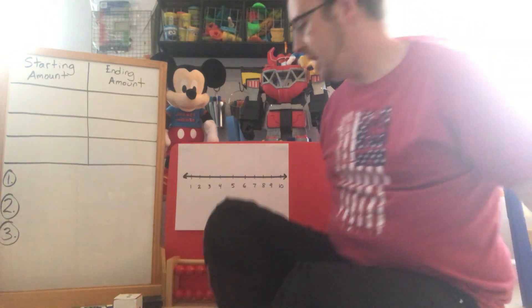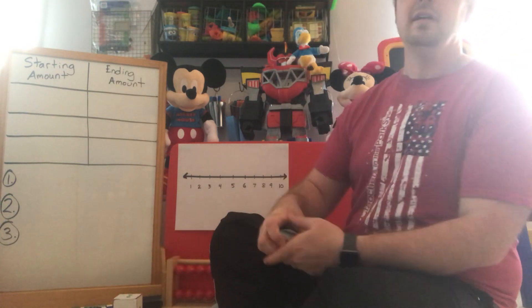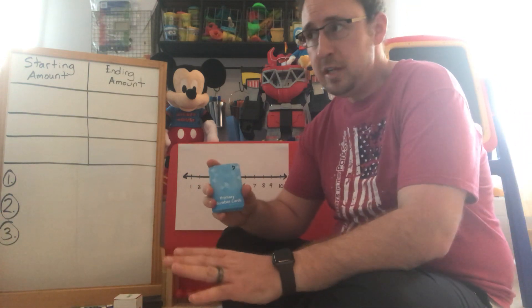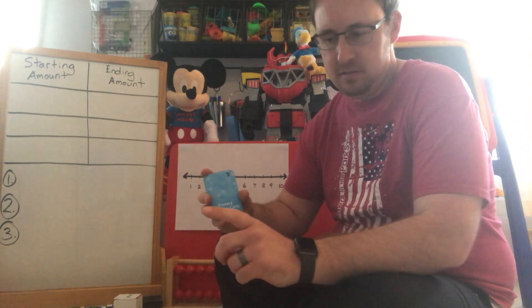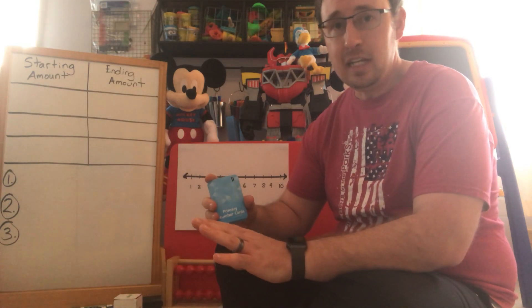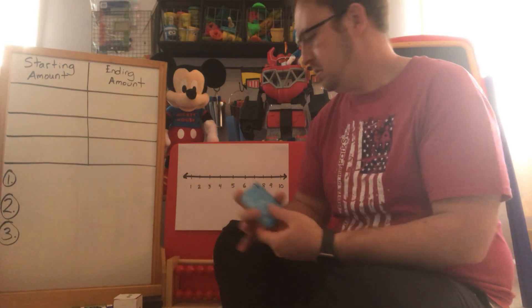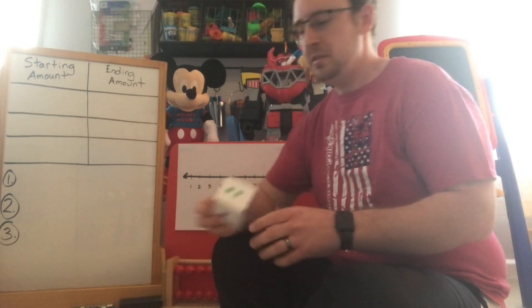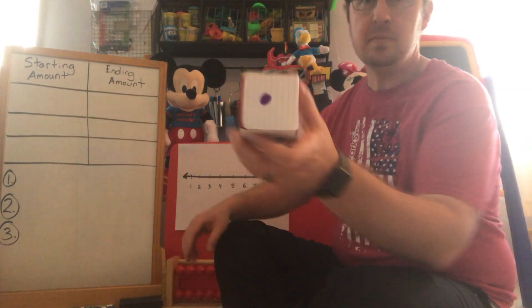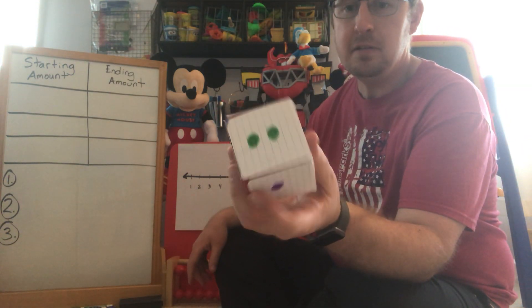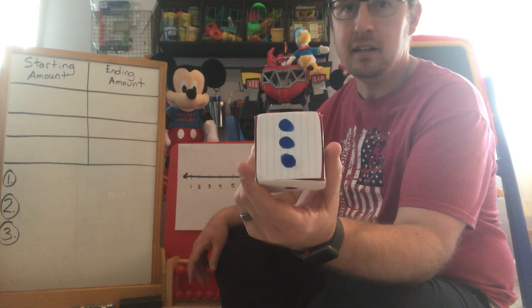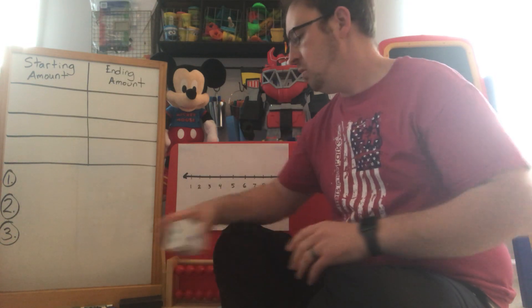Alright so to play the game you guys are gonna need your primary number cards. Make sure that you don't have a zero, a one, or a two in your deck and get rid of those wild cards. You don't want them either. You also need your dice block. This dice block has a one, a two, and a three. Okay so make sure you have a dice block to show one, two, or three.